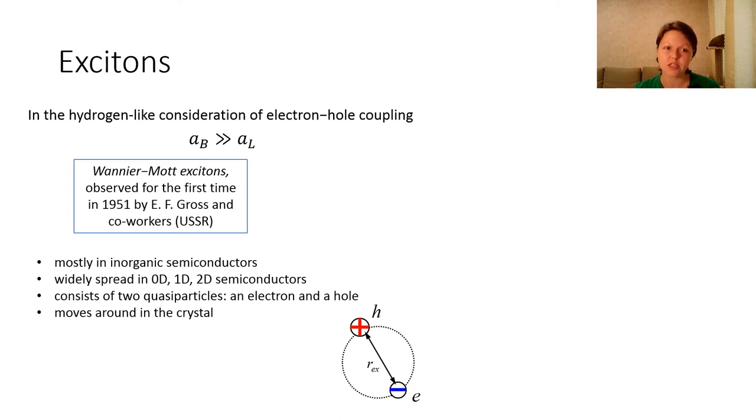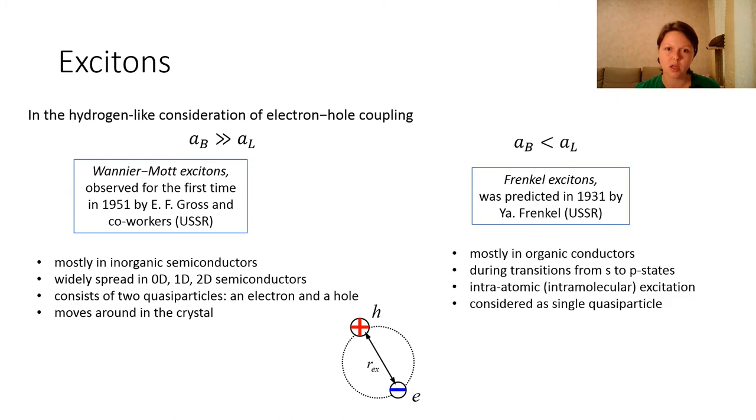But sometimes the exciton Bohr radius is a little less than the crystal lattice constant. In this case, we are dealing with Frenkel excitons that were predicted by Frenkel in 1931.